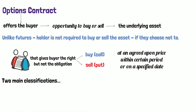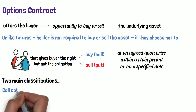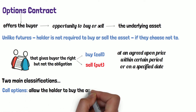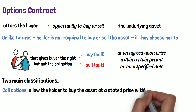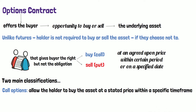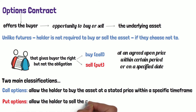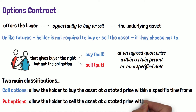The two main classifications under options are: call options, which allow the holder to buy the asset at a stated price within a specific time frame, and put options, which allow the holder to sell the asset at a stated price within a specific time frame.